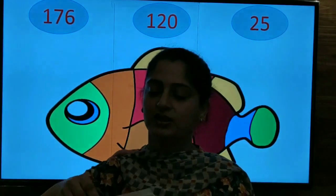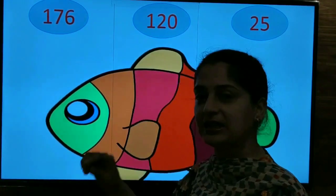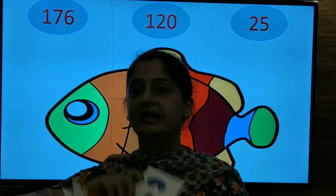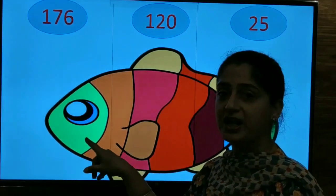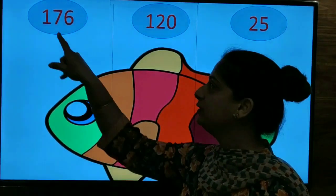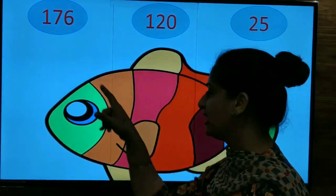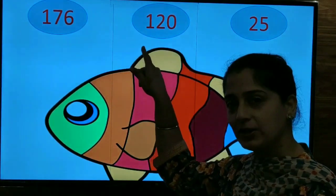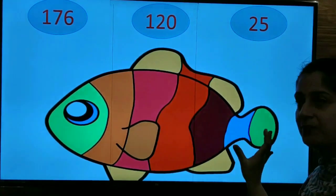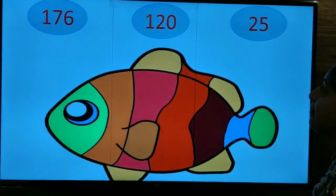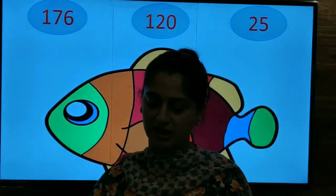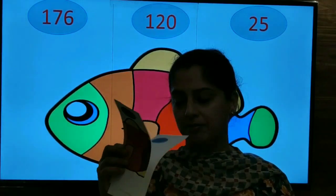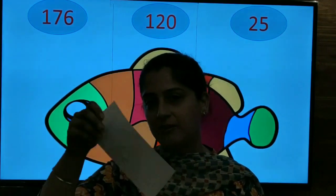You will take a plate. You will make a fish and you will cut this into equal three parts. On these three parts, on first part of the fish where it has an eye, you will write 176. On the middle part with the stomach and fins, you will write 120. And with the tail part, you will write 25. You will tear off the fish into three equal parts. And after writing the numbers, now mix these numbers.